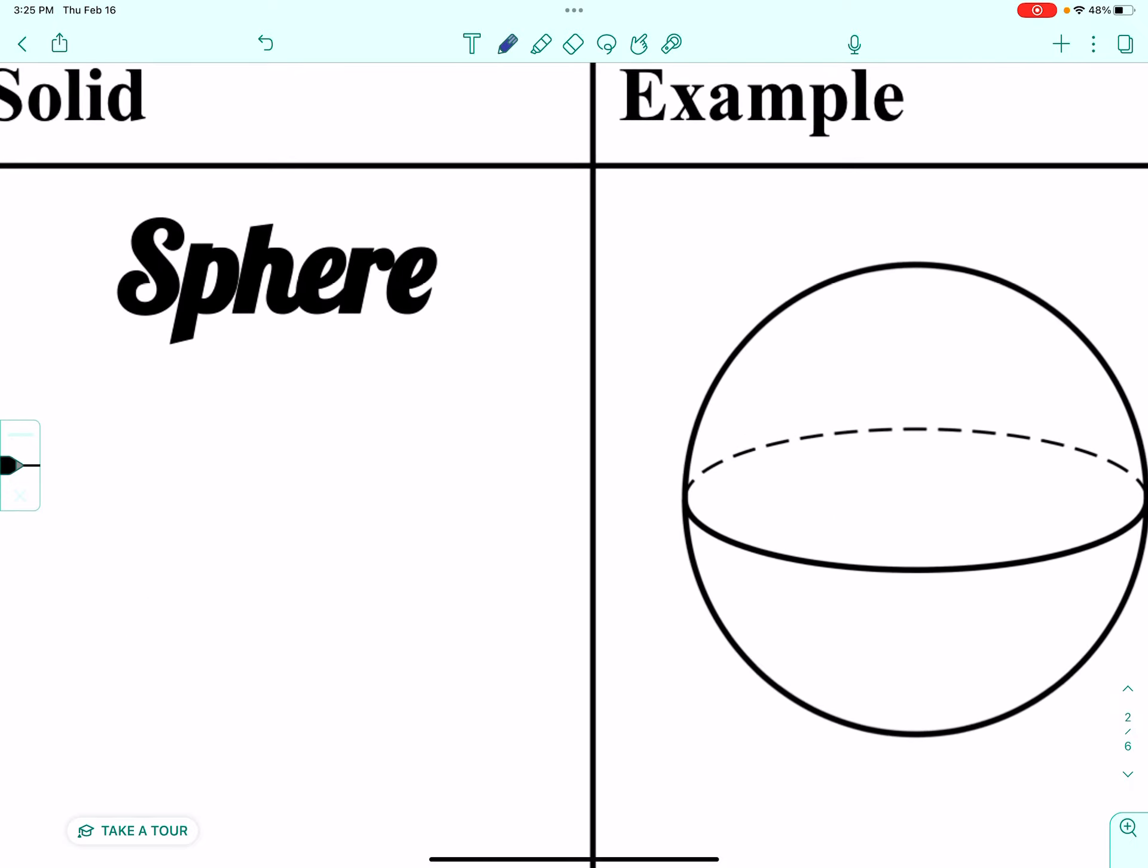Please, please, please do your math teachers a favor and remember that the PH makes an F sound. This is a sphere. It looks like a basketball. A spear is something that is sharp and pointy and used for hunting.